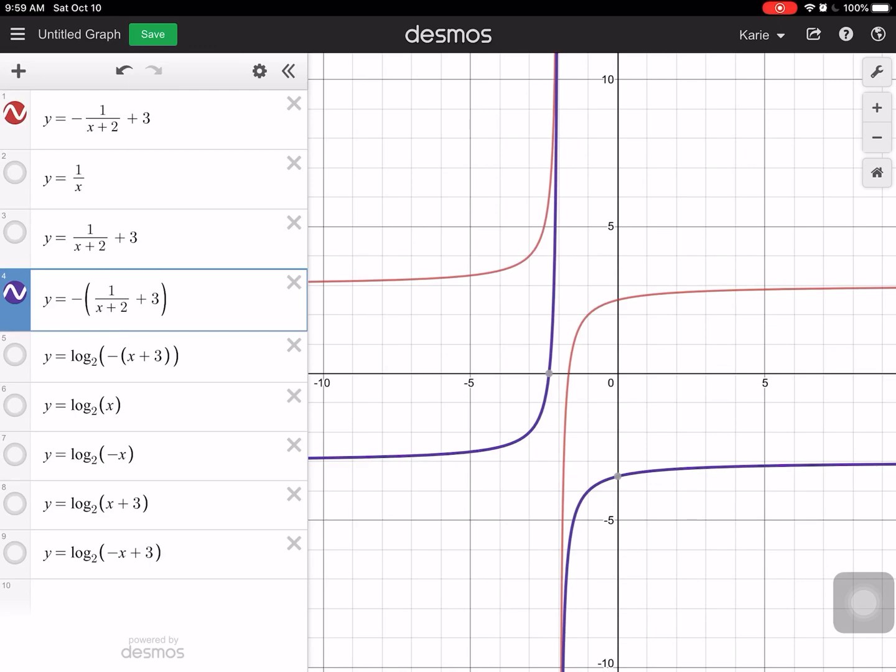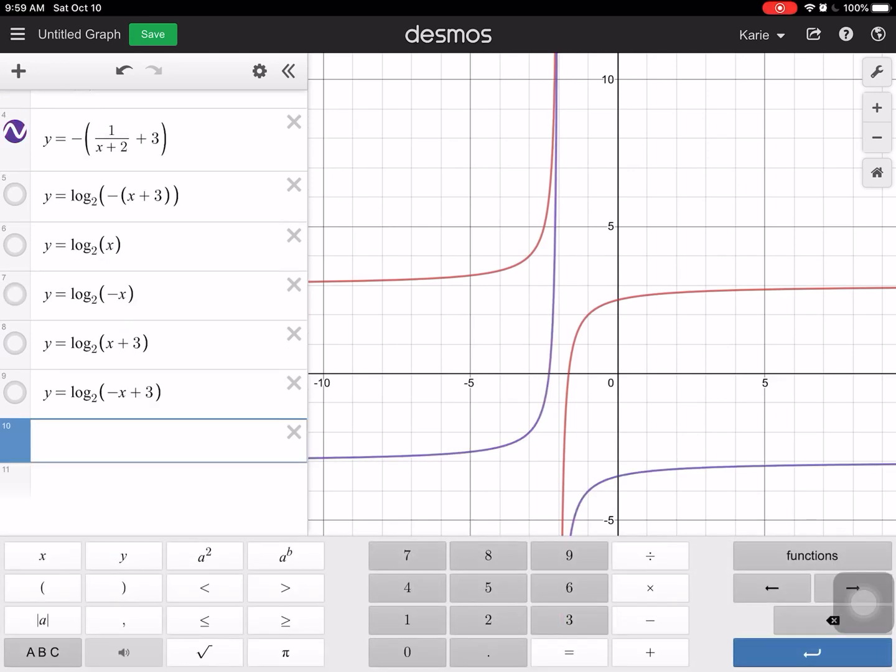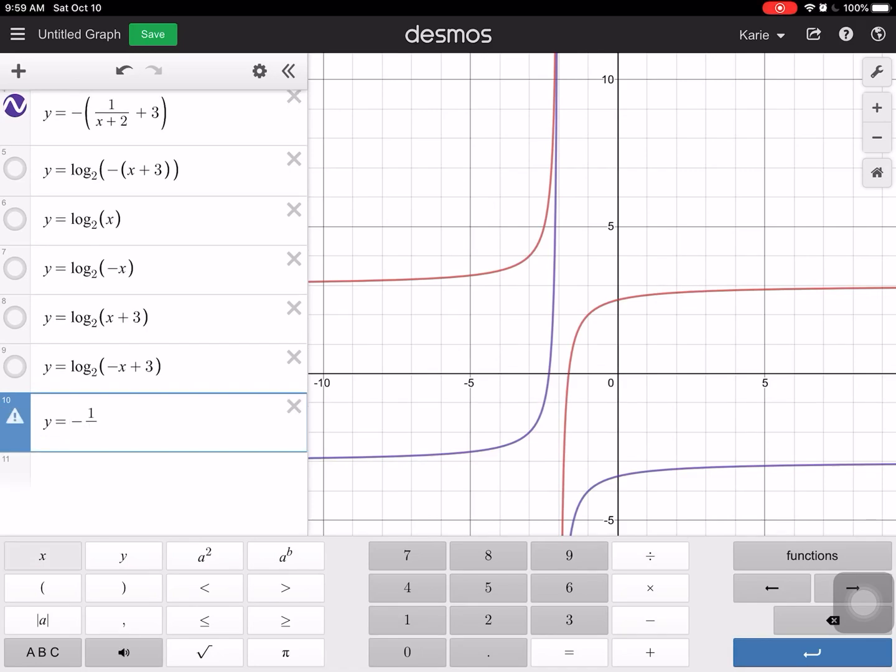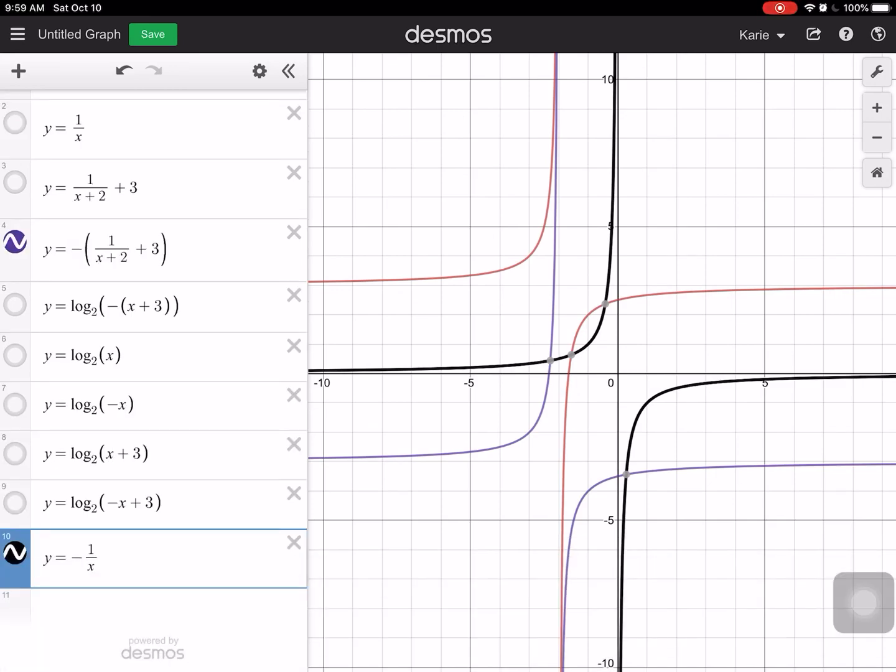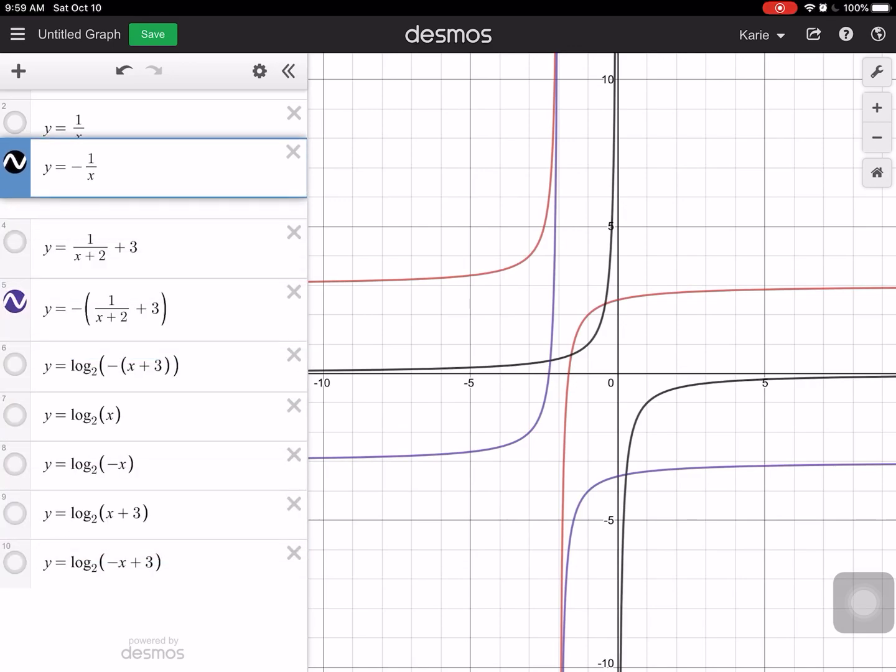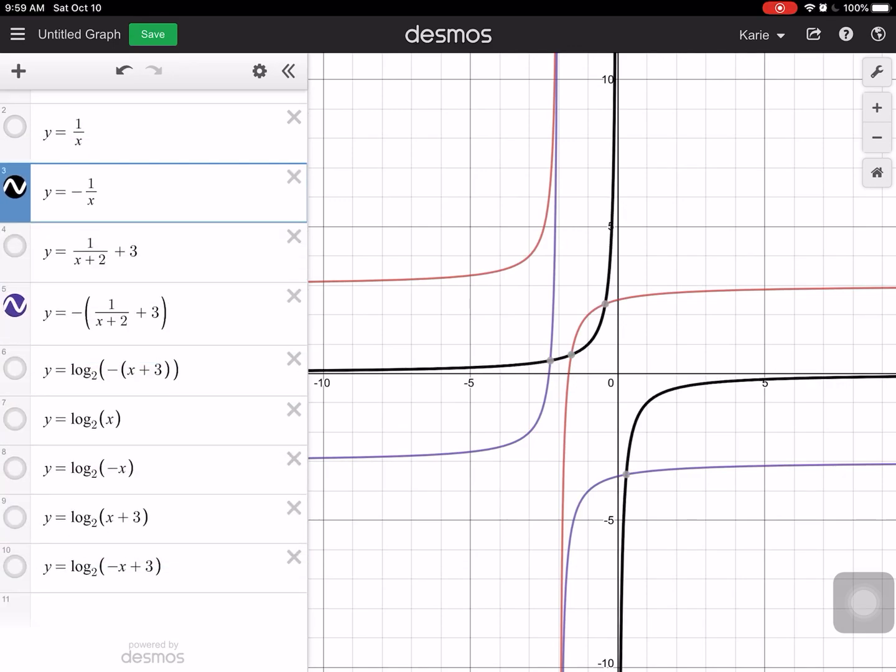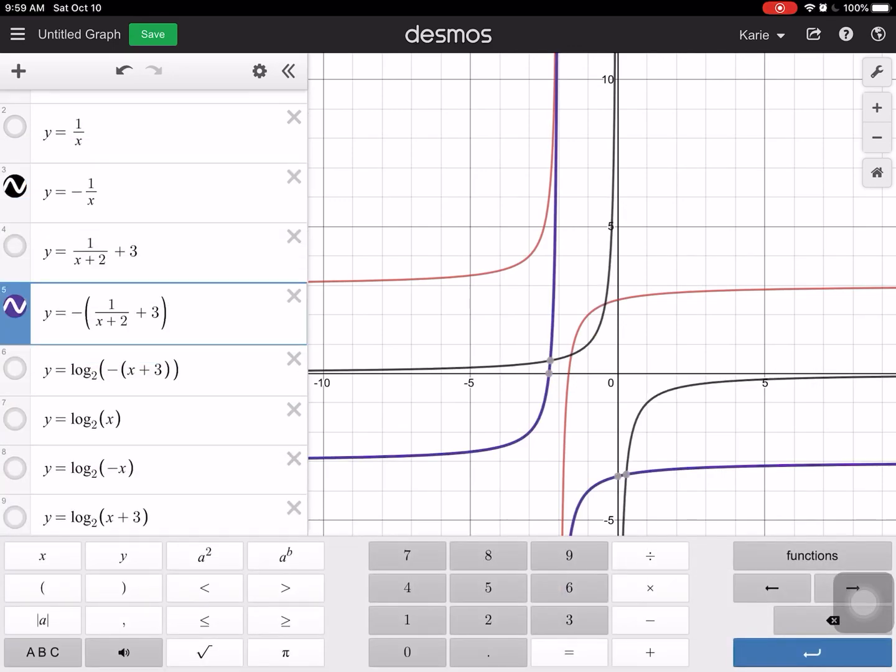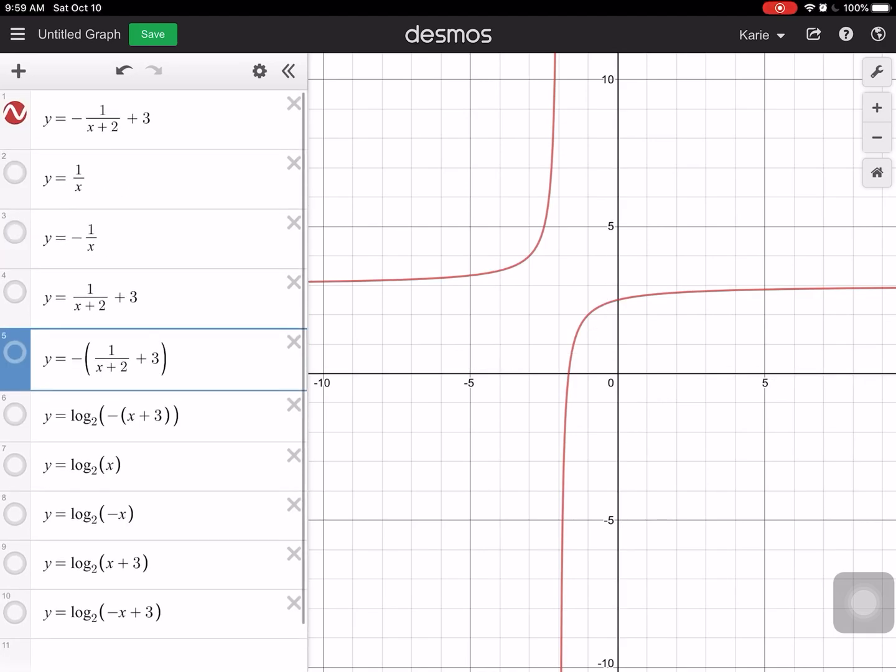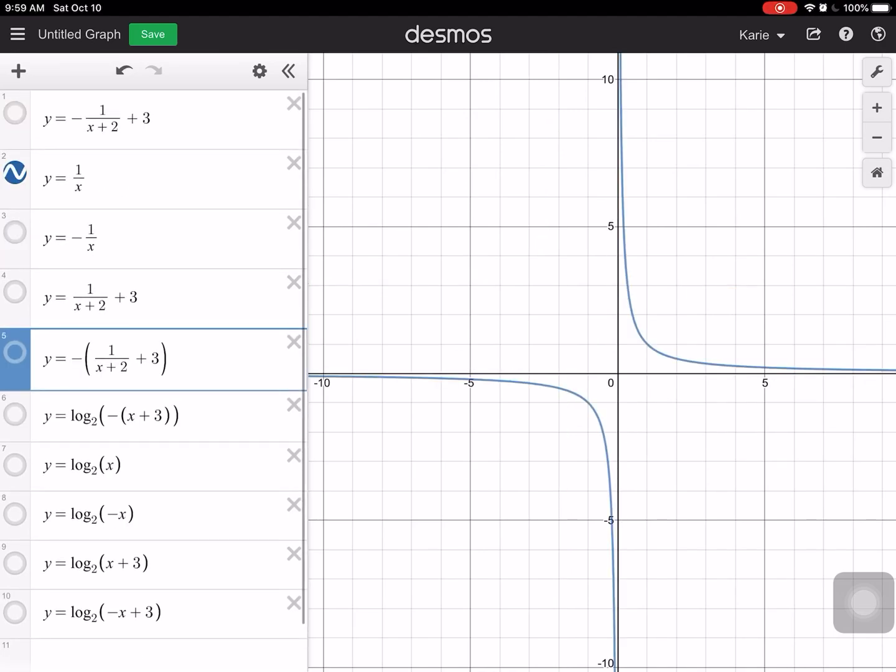And I should have typed this in. Let me do y equals negative one divided by x. Okay, so if I have that one, if I start at the parent function right here, what I need to do first is